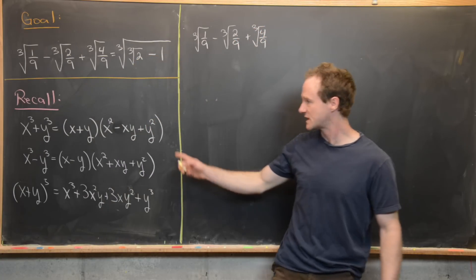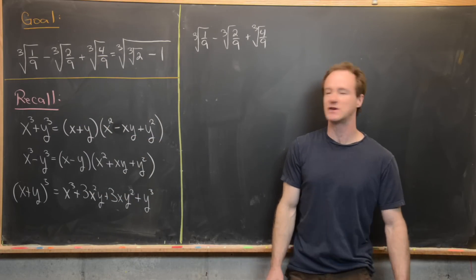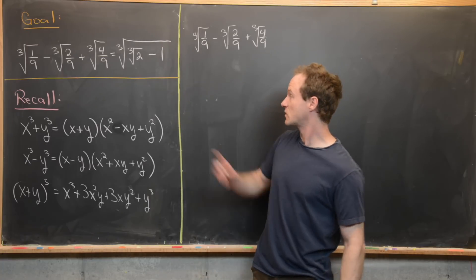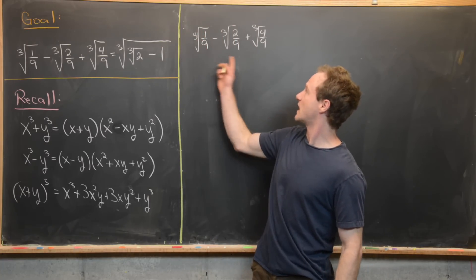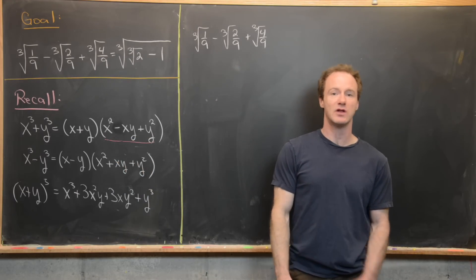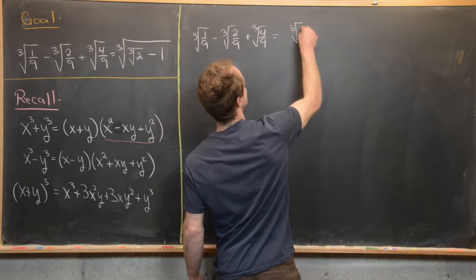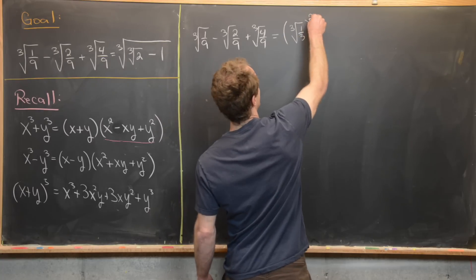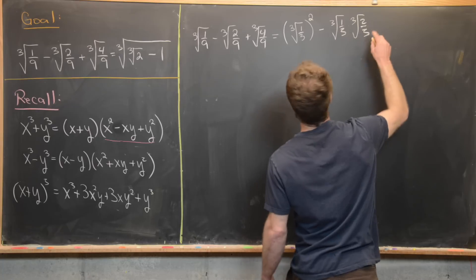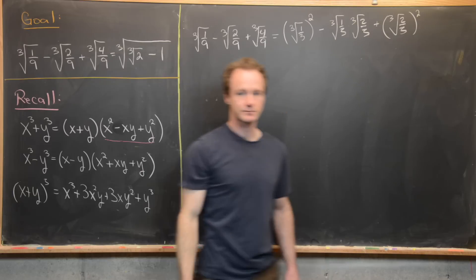For tools, I want to use these fairly standard properties of sums of cubes, difference of cubes, and a binomial cubed. Starting with the sum of cubes, notice that the expression can be visualized as x² - xy + y². The expression is the same as the cube root of 1/3 quantity squared minus the cube root of 1/3 times the cube root of 2/3, plus the cube root of 2/3 quantity squared.